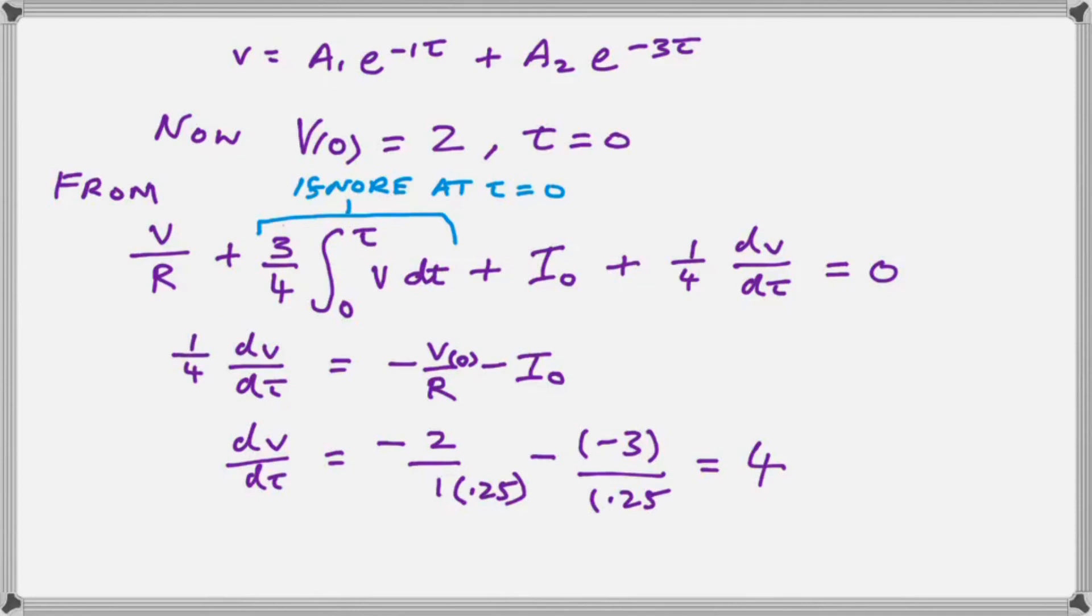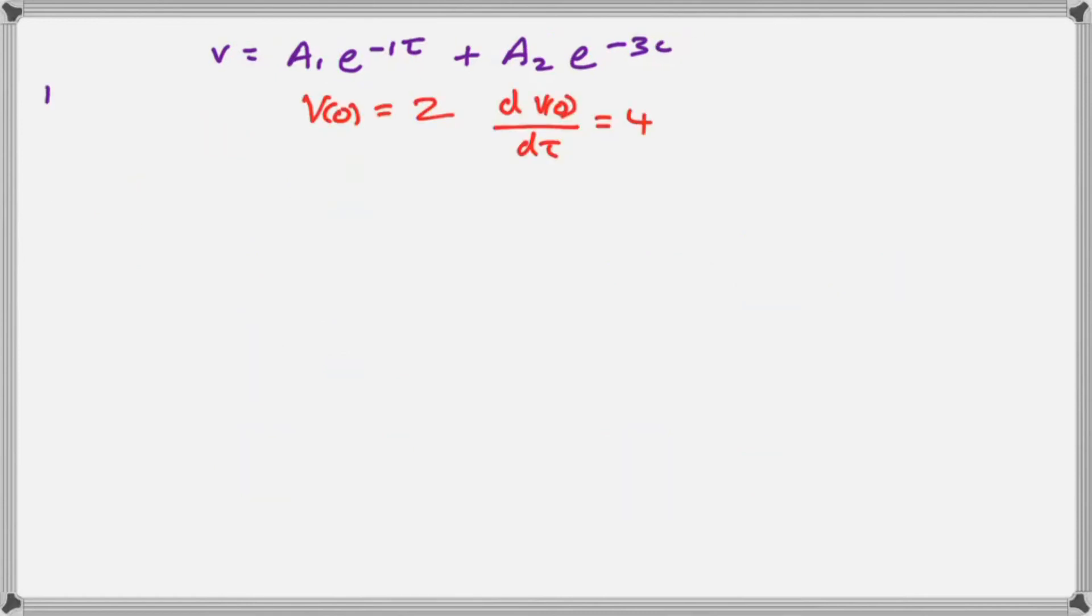So now we have v equals two and dv dt equals four, we can undertake a serious solution. So we have v_o is two and v_o derivative is four and we have our v. So it remains for us to differentiate our solution so that we have an expression for our solution that begins with dv dt.